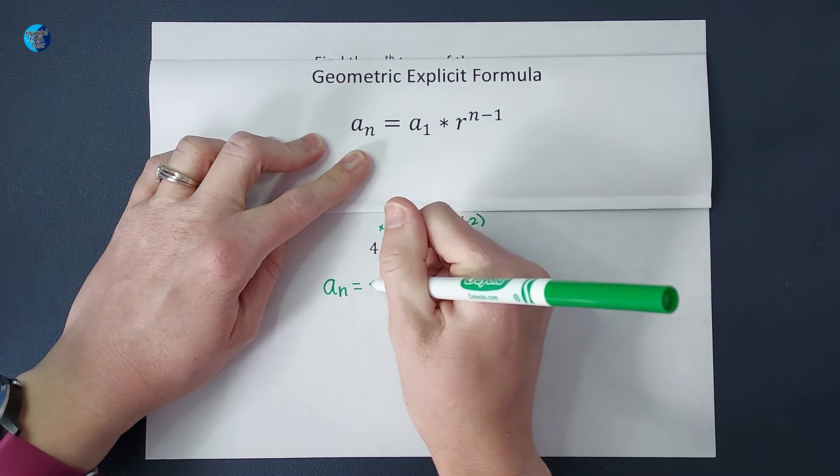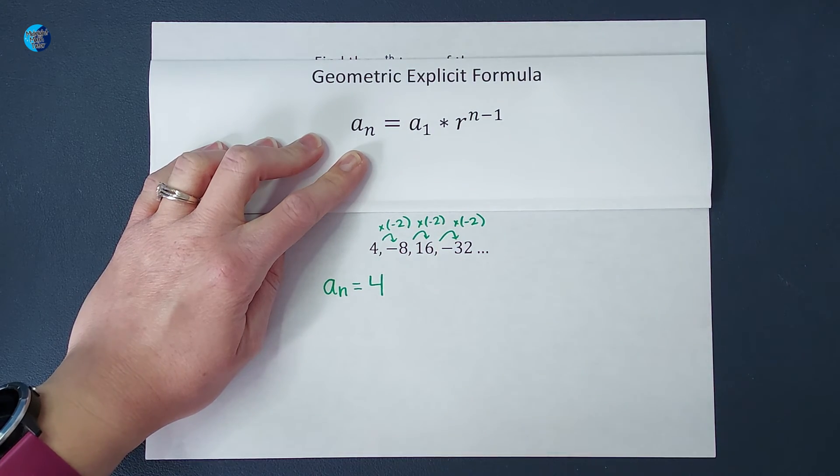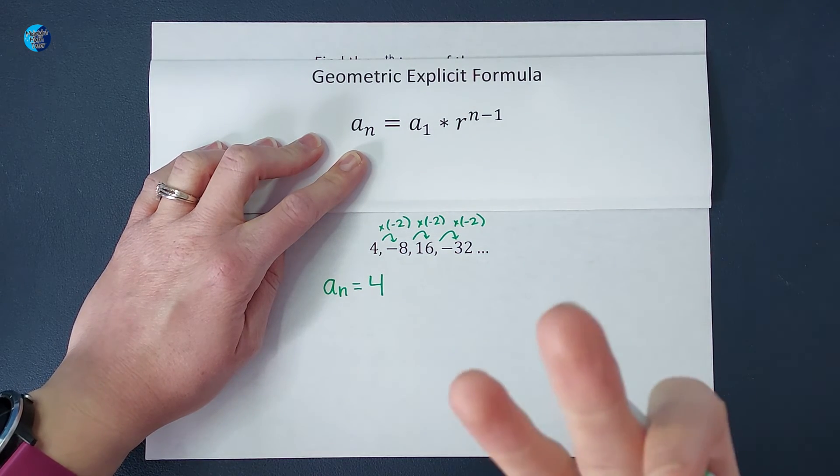In this case, it's 4 multiplied by the common ratio or what's changing each time.